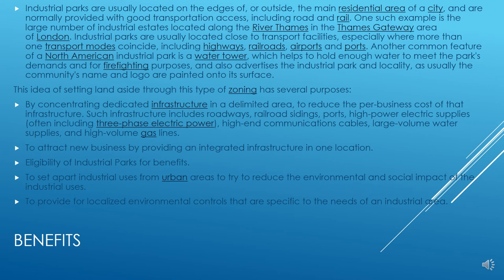Setting land aside through industrial zoning has many purposes: concentrating dedicated infrastructure in a delimited area to reduce per-business costs — including roadways, railroads, high-power electric supplies, high-end communication cables, large-volume water supplies, and high-volume gas lines; attracting new businesses by providing integrated infrastructure in one location; setting apart industrial users from urban areas to reduce environmental and social impact; and providing localized environmental controls specific to the needs of an industrial area.